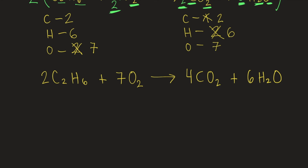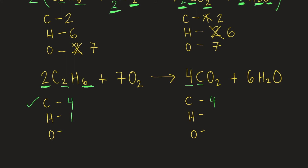Now let's quickly check if this is really balanced by counting C, H, and O on both sides. For carbon: on the left side, 2 times 2 is 4; on the right side, 4 times 1 is also 4. Carbon is balanced. For hydrogen: on the left side, 2 times 6 is 12; on the right side, 6 times 2 is also 12. Hydrogen is already balanced.